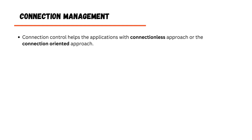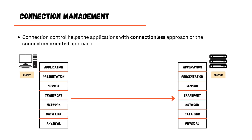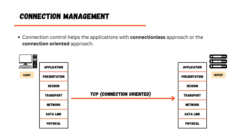The third functionality is connection management, where connections are created and controlled at the transport layer. Connections can be established through a connectionless approach or a connection-oriented approach. If using the connectionless approach, UDP protocol is used. If using the connection-oriented approach, TCP protocol is used. Therefore, at the transport layer, only two protocols are used — either UDP or TCP — for the transportation of data.